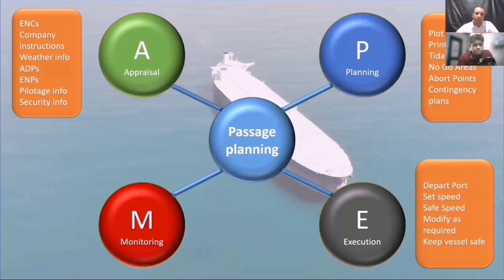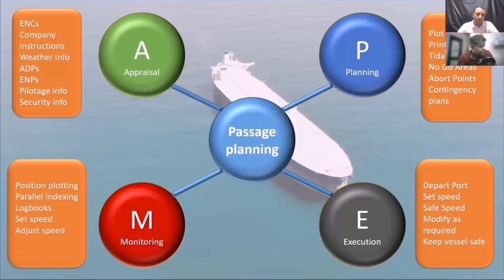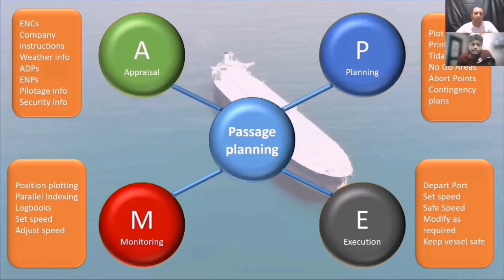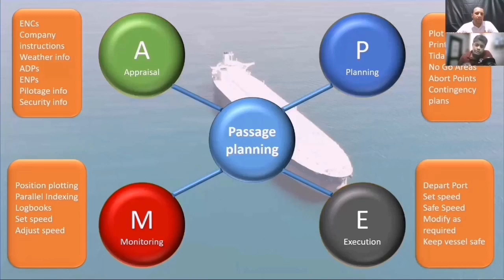Anyone who is part of the watch is responsible for execution and monitoring. Monitoring means you are plotting the position, doing parallel indexing — basically making sure the vessel is on the right track. You are also adjusting your speeds and destination ETAs so that your ship is always on the right track. For example, if you are going to cross the Singapore Strait on a VLCC, you have to think of the tidal window — at which time you have to pass — and you must adjust your speed to reach at that time. If you reach too early or too late, you may not comply with Singapore regulations. That is all under monitoring — filling logbooks, setting and adjusting speeds.